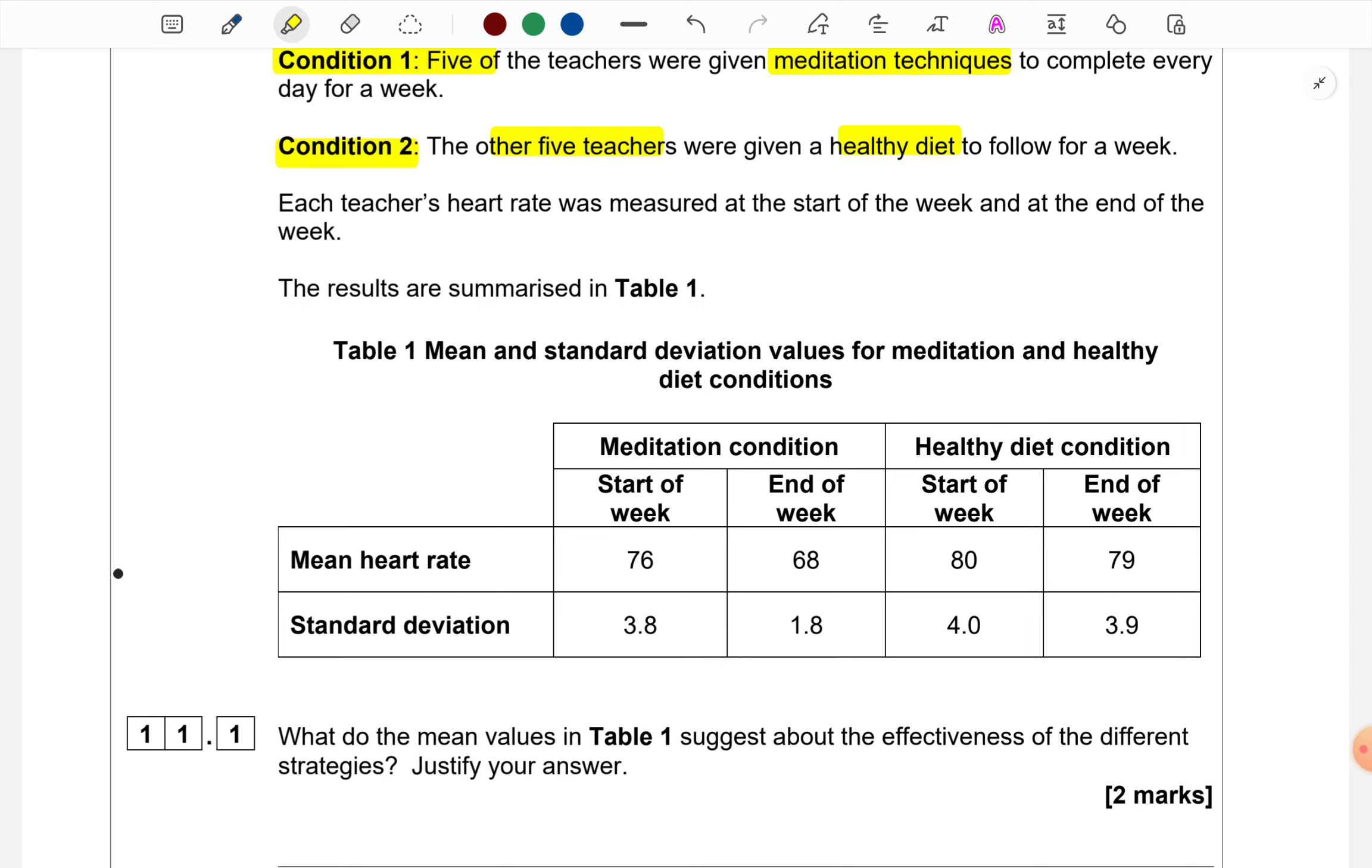Just to quickly look at the table, the title reads mean and standard deviation values for meditation and healthy diet conditions. In column 1, we have the meditation condition start of the week, end of the week. In column 2, we have healthy diet condition start of the week, end of the week. In the rows, we have the mean and the standard deviation respectively.